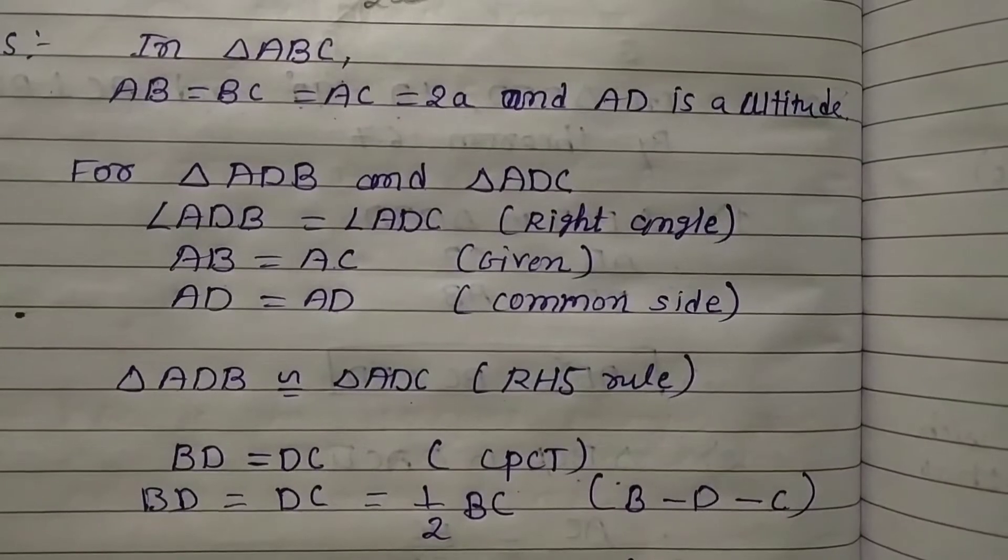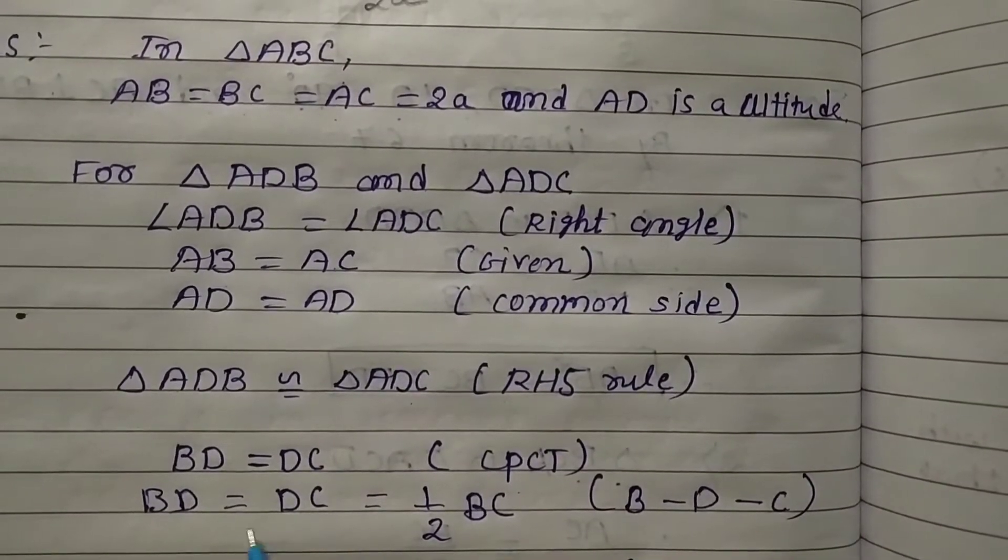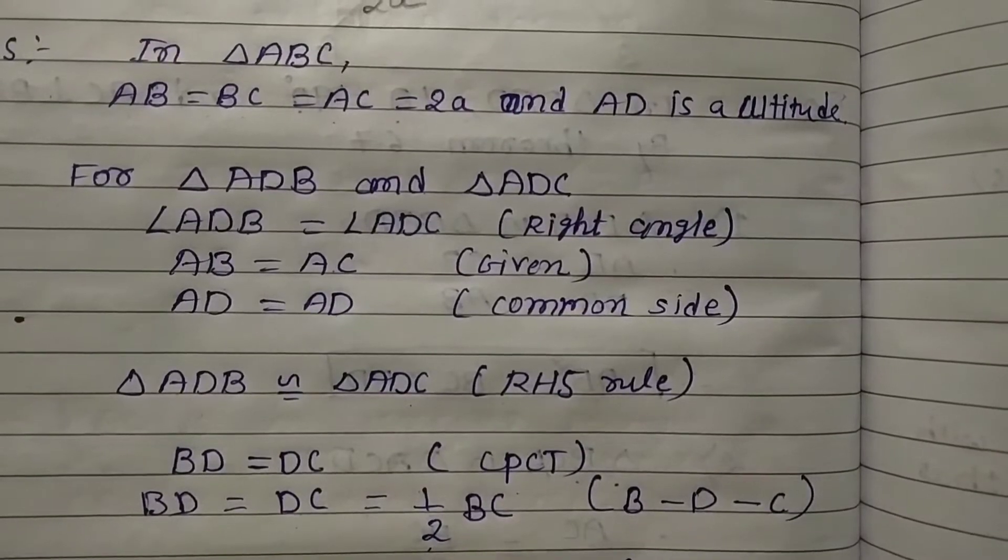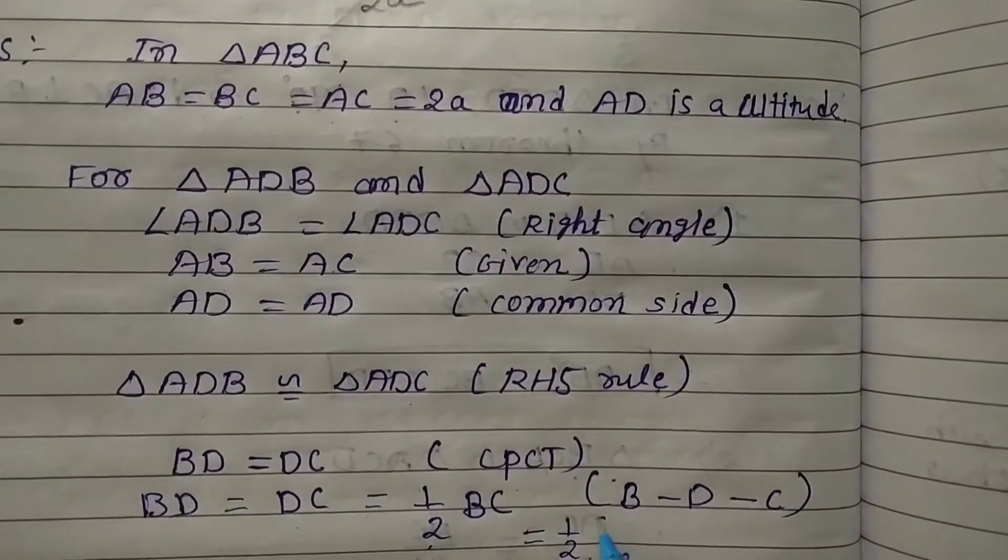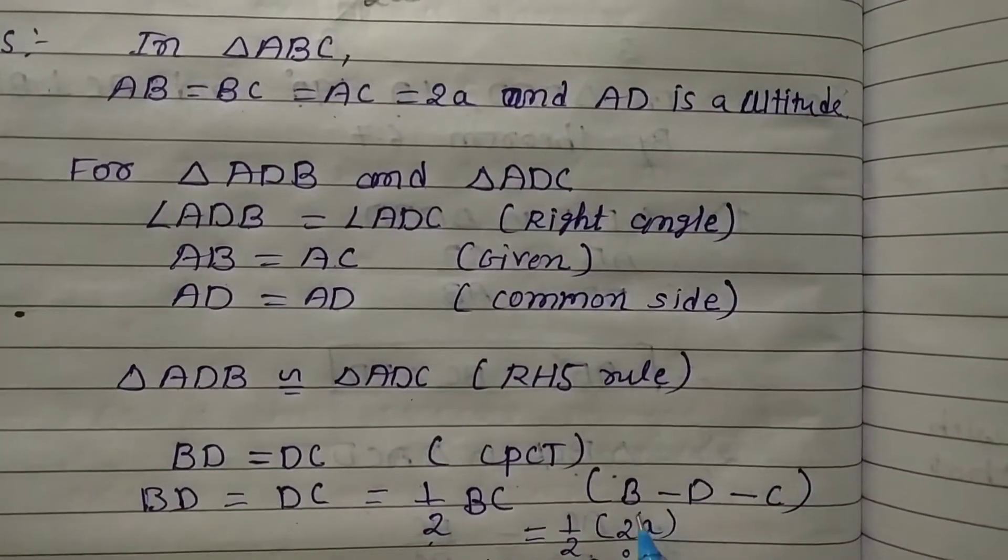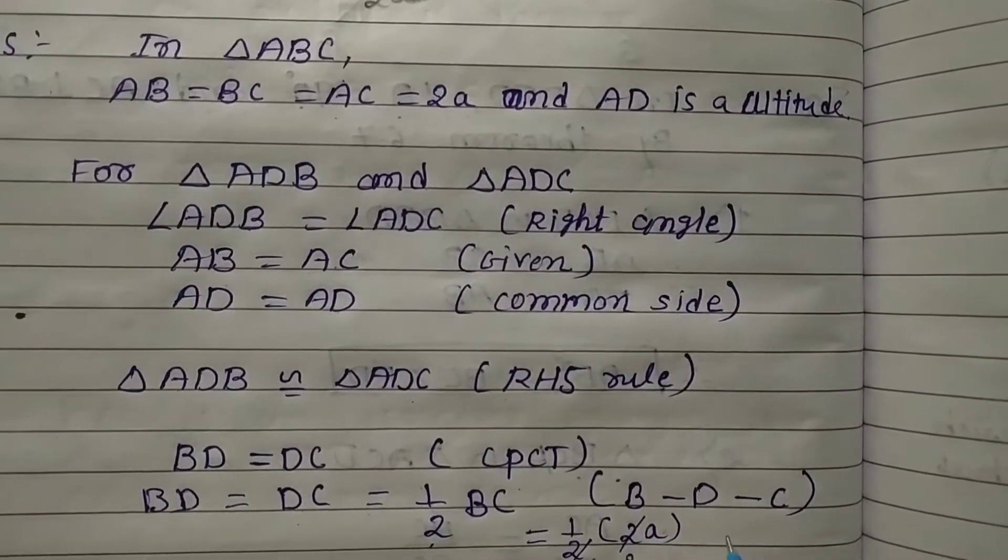So BD = DC = (1/2)BC. But we know BC = 2a, so BD = DC = (1/2)(2a) = a.